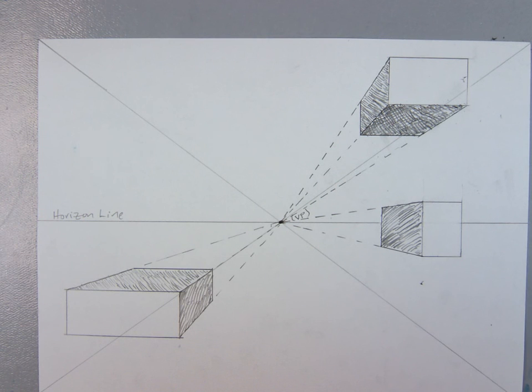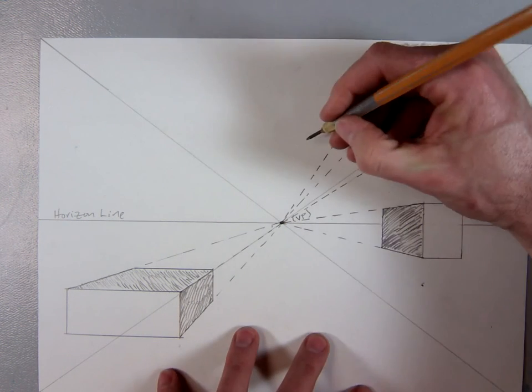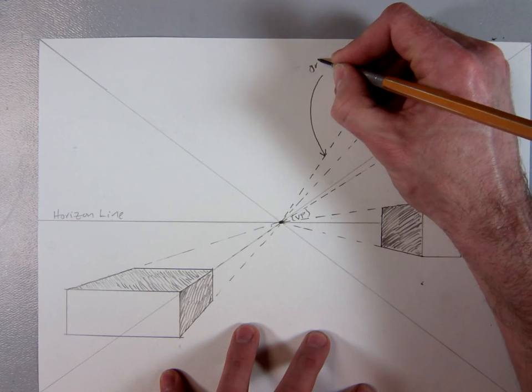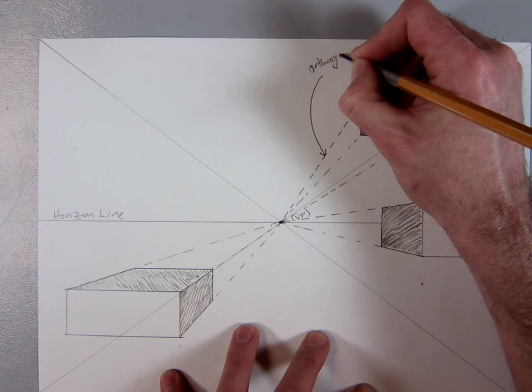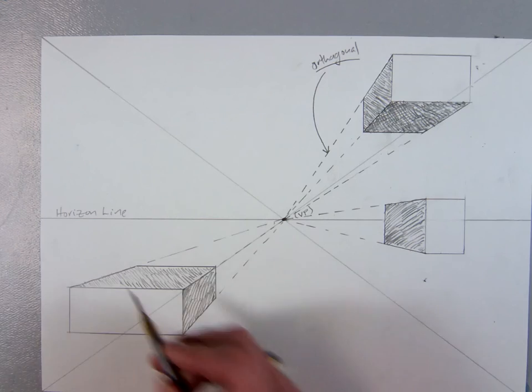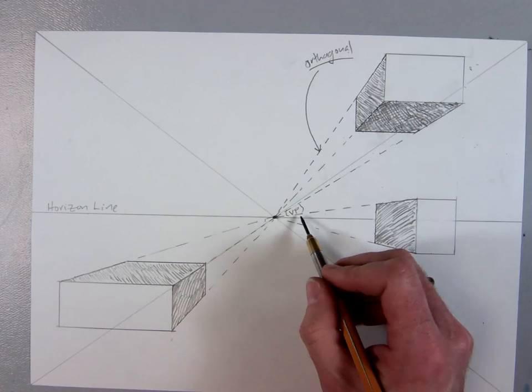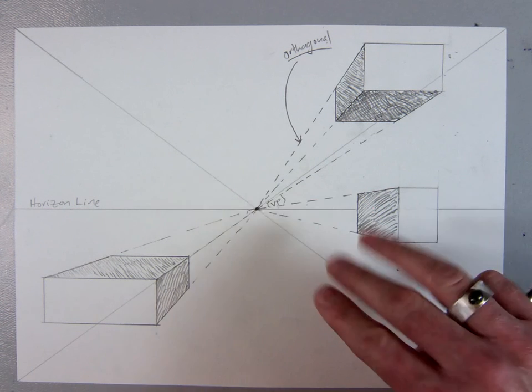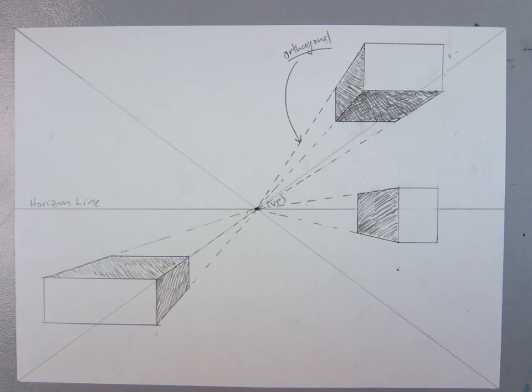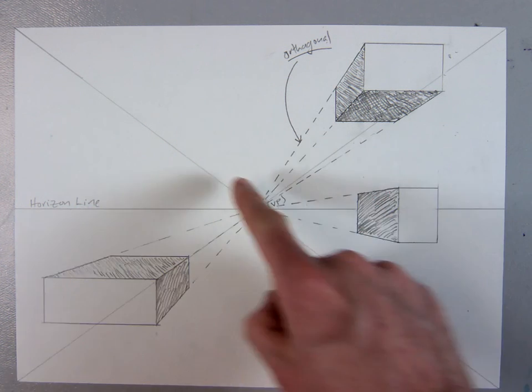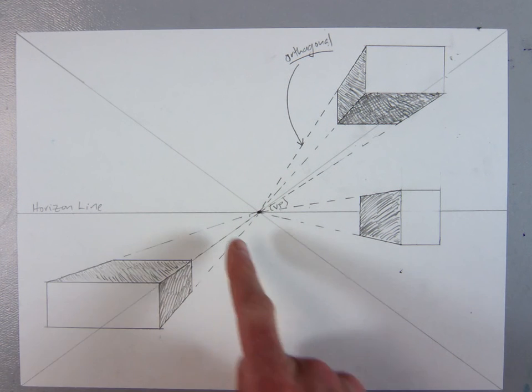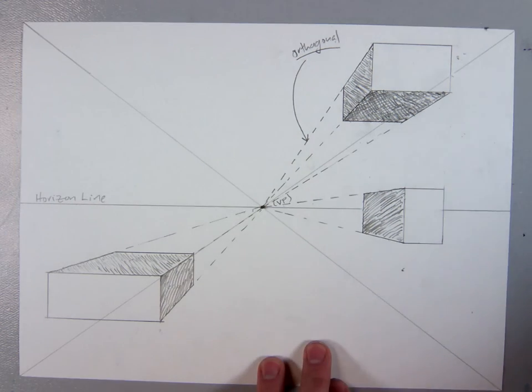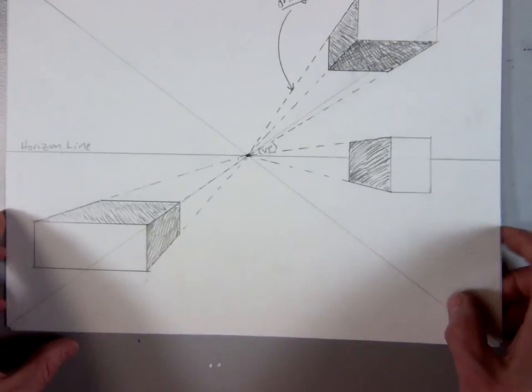Last step here is I want you to just draw an arrow and write the word orthogonal so that I know you know where the horizon line is, you know what an orthogonal is, and you know what the vanishing point is. Now that I've finished three on my own and with you in the video, I would like you to finish three more on your own, one that's above, one that's below, and one that is right in the middle. They can be any size you like. And that concludes our lesson on one point perspective.